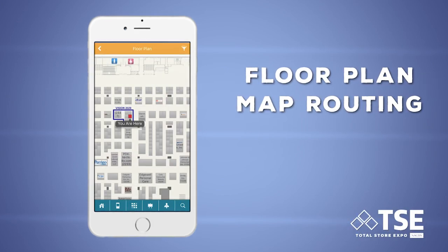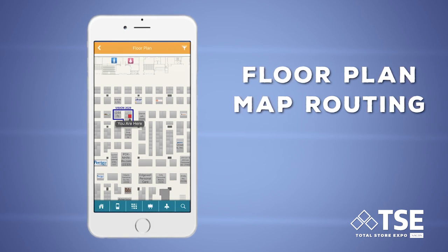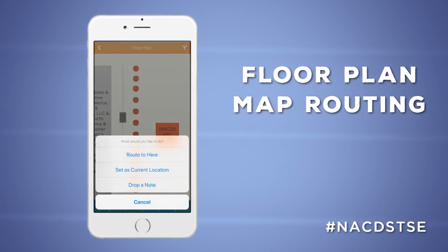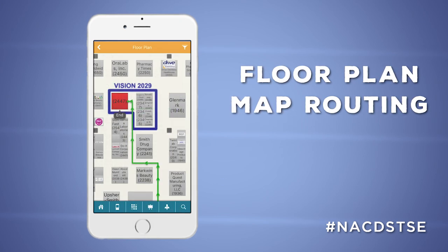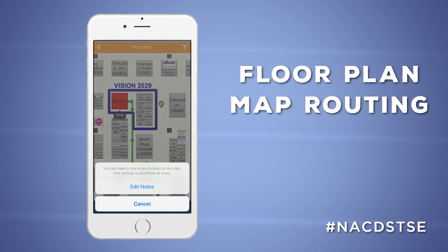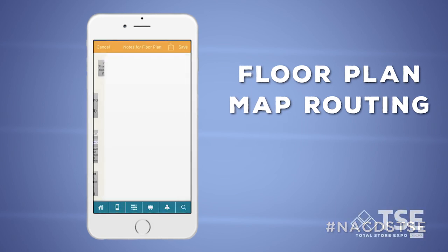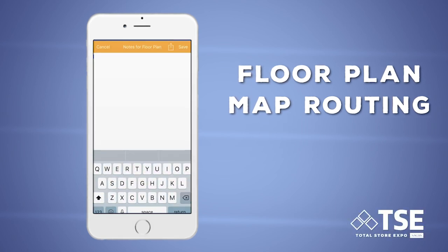One of my favorite features of the TSE app is our floor plan map routing. To see your current location or to find a route to a destination, simply tap and hold on a booth. To leave pinned notes on the map, simply tap and hold anywhere on the floor plan.